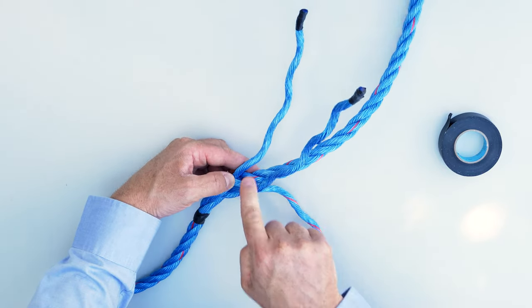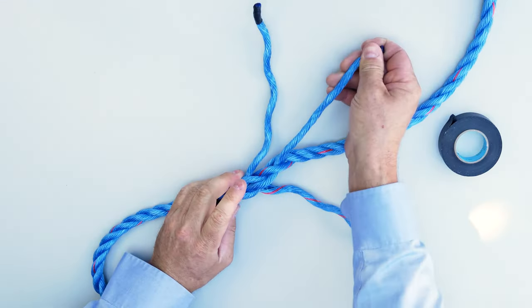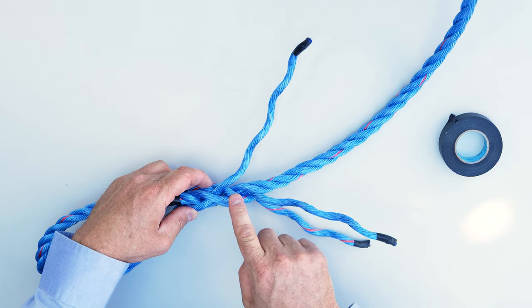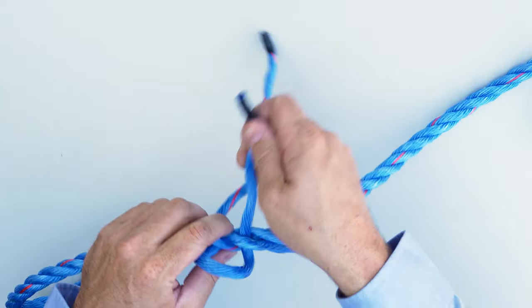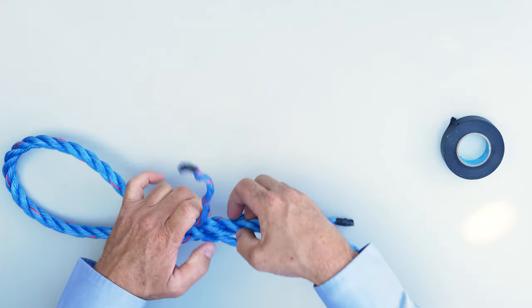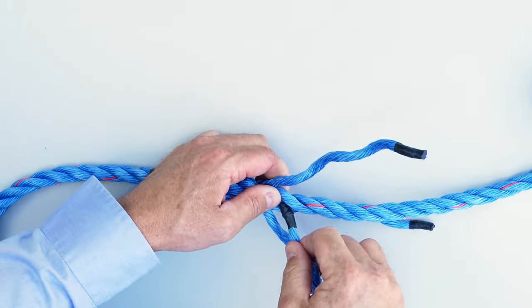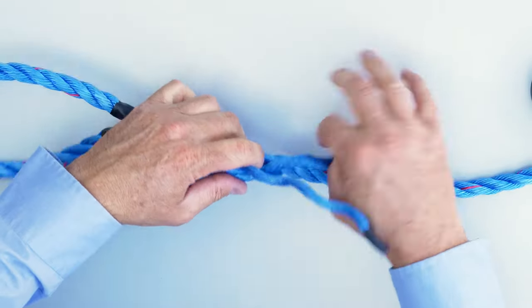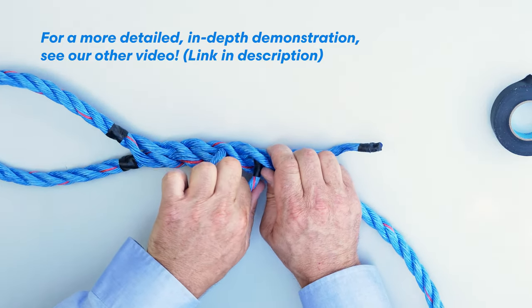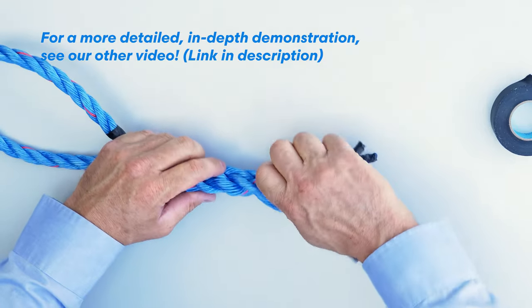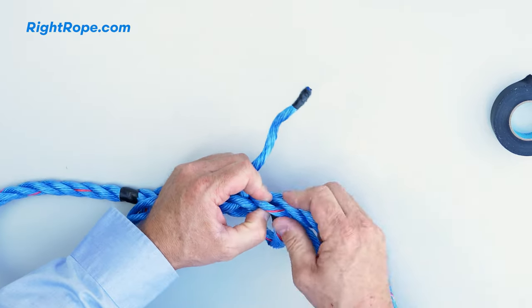So go over top of this strand, underneath that strand. Turn the rope and do the next one, over top of that one, underneath that one. Then the next one, over top and underneath. Then the next one, over top and underneath.